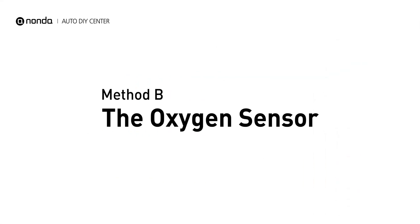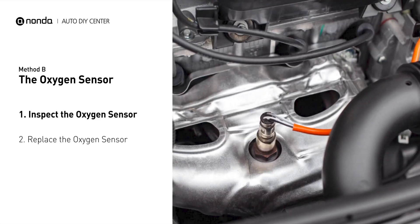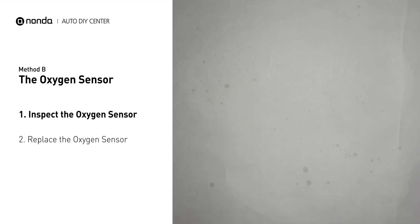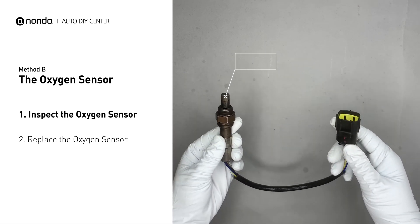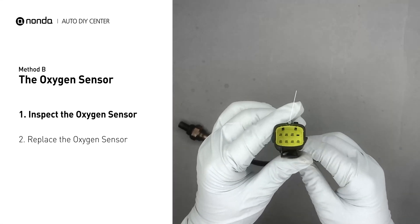Method B: the oxygen sensor. Oxygen sensors are mounted directly onto the exhaust pipe near the catalytic converter. Locate the sensor that responds too slow as it ages, and visually check the oxygen sensor's electrical connections.